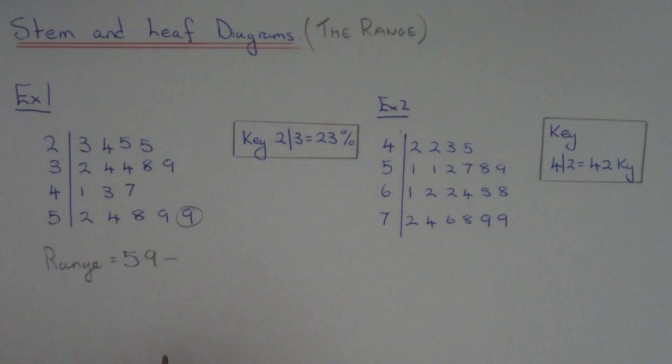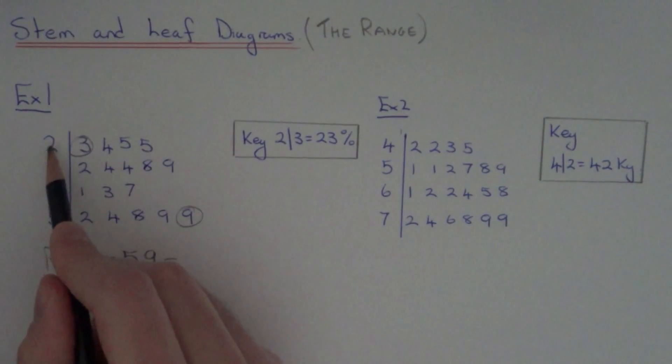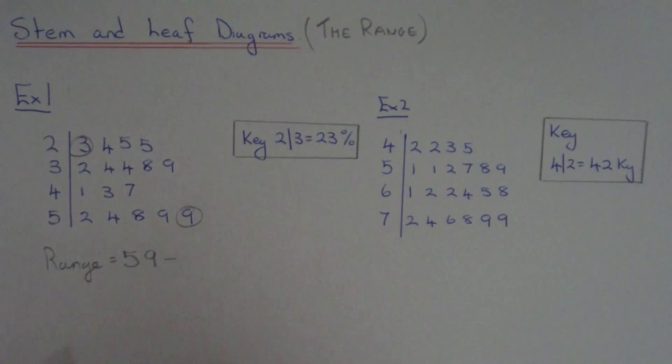And our smallest number is this one here. That is 23. So again, make sure you write down 23, not just 3.